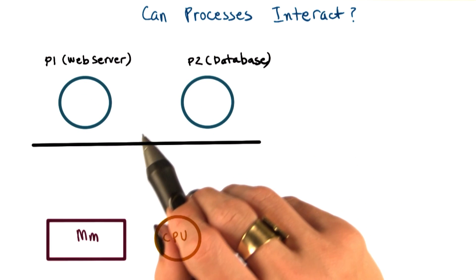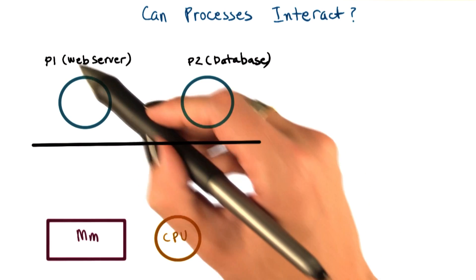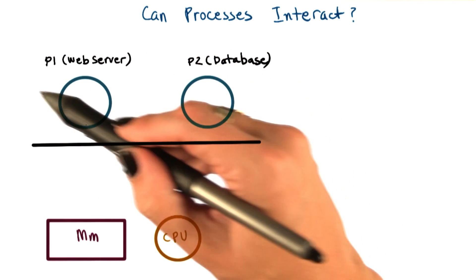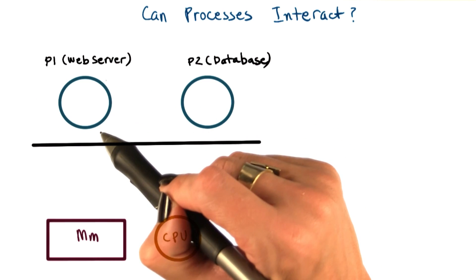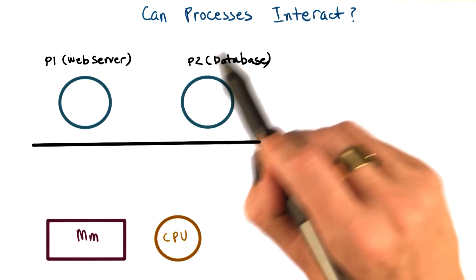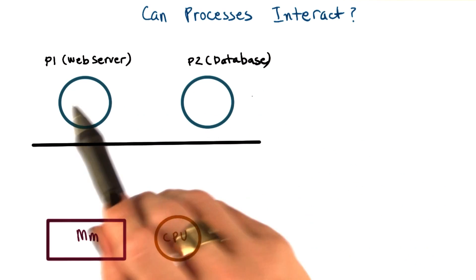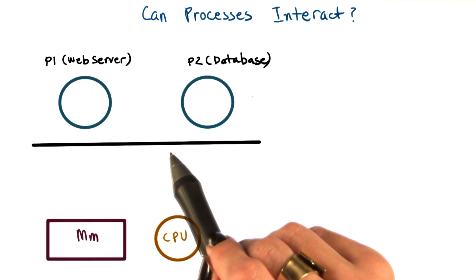For instance, here's an example of a web application consisting of two processes on the same machine. The first one is the web server, the front end, that accepts the customer requests. And the second one is the back end, the database that stores customer profiles and other information. This is a very common case in many enterprise and web applications.